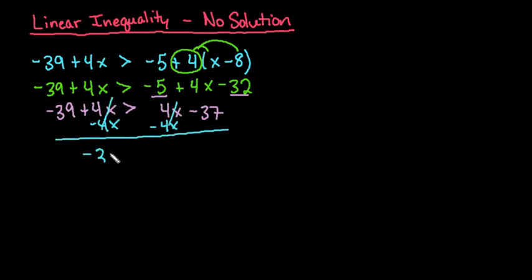And I'm left with this statement, negative thirty-nine is greater than negative thirty-seven. And if you think about this on a number line, if zero is here and negative thirty-seven is down here, negative thirty-nine is never going to be greater than that. Negative thirty-nine is always to the left of that.